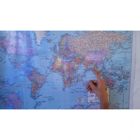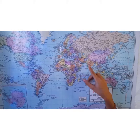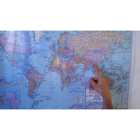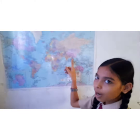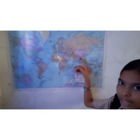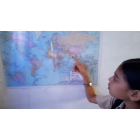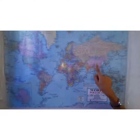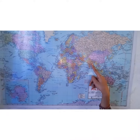Asia is separated from Europe, and the Tropic of Cancer passes through this continent. It is separated by the Ural Mountains on the west. The combined land mass of Europe and Asia is called Eurasia.